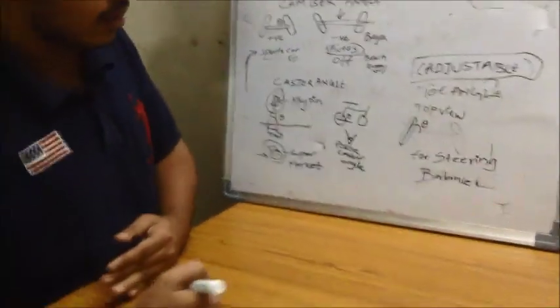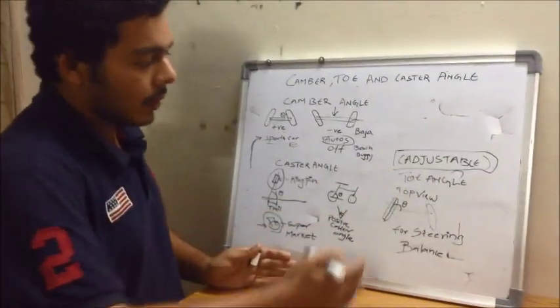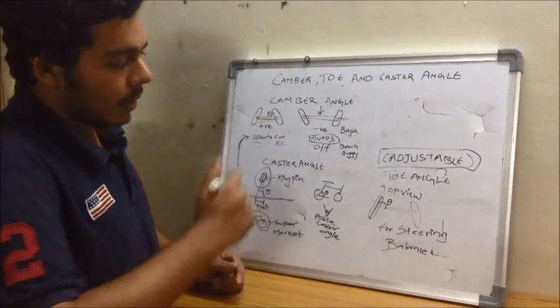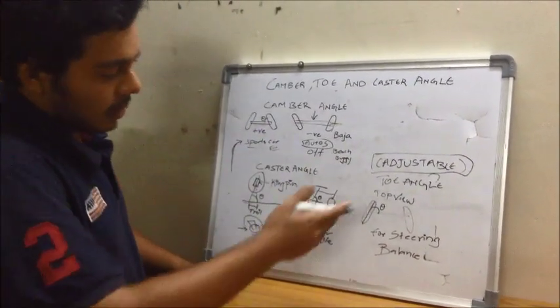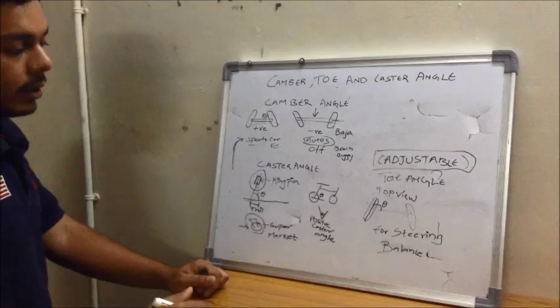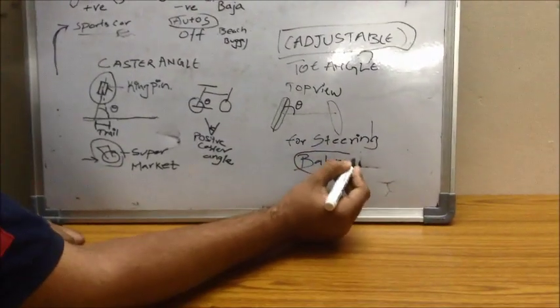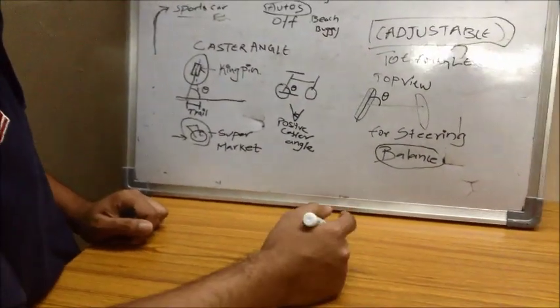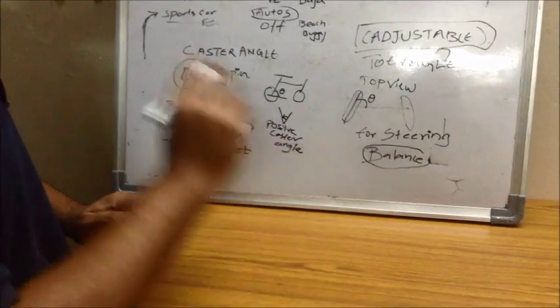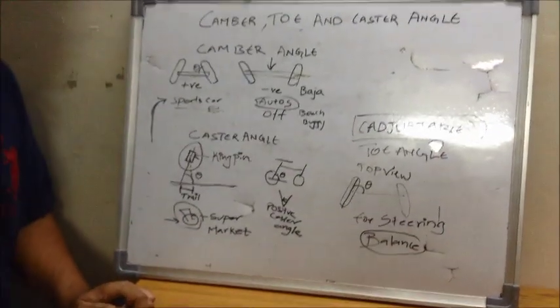Because when we are getting power from the rear axle, so for the stability of the vehicle in the front tire, we are making this toe angle. And this is for balance also and for steering purpose. This is usually adjusted in the vehicles in our day to day life. So this was about camber, toe and caster angle.